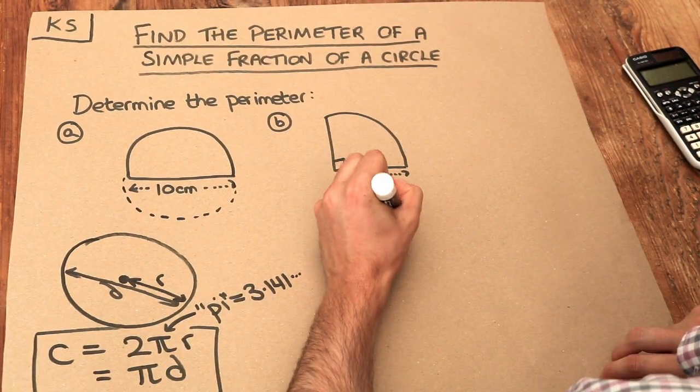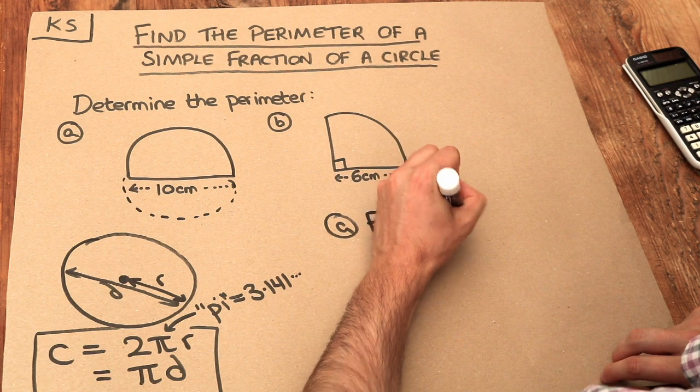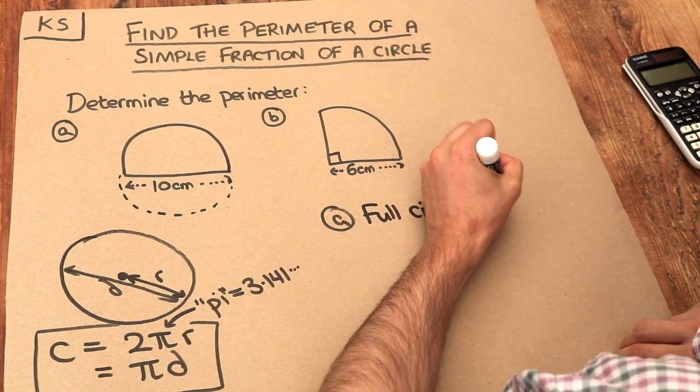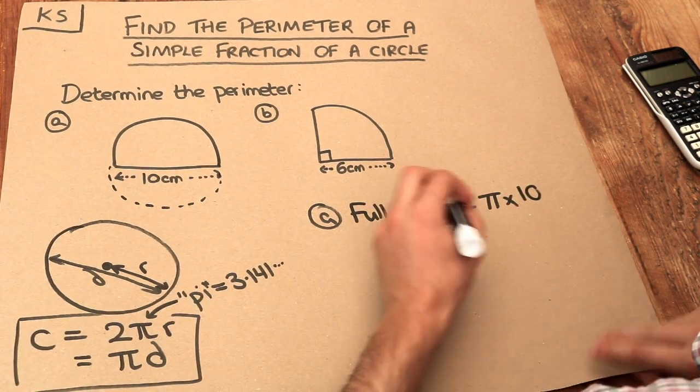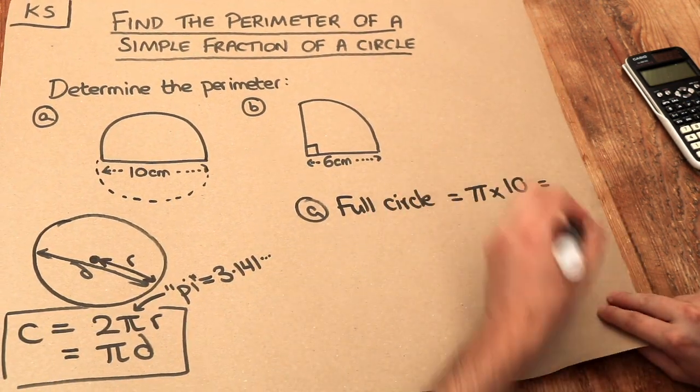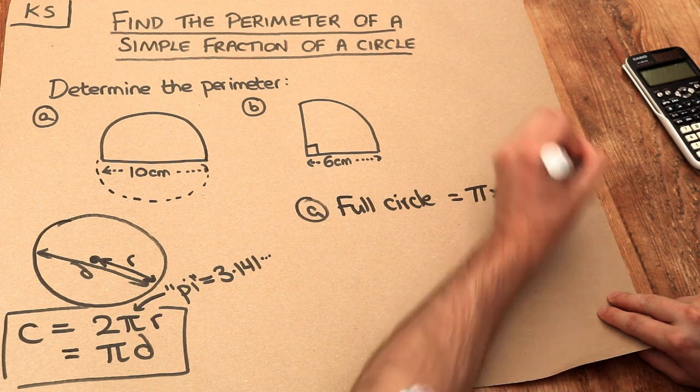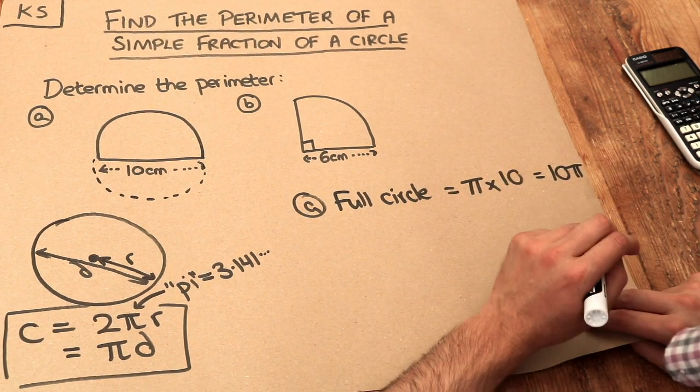So the full circle has perimeter or circumference pi times the diameter, so pi times 10. And if you put that on a calculator, it will just simplify it to 10 pi. You could convert it to a decimal, but it's best to do that at the end.